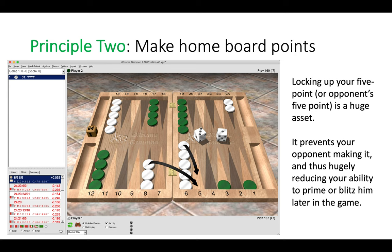Here by a large margin it's right to make the five point. The second principle: make home board points in the opening game. Locking up your five point or the opponent's five point is a huge asset. Three-one is the best opening roll. By making your own five point, it prevents your opponent making it, making the golden anchor. If your opponent did make that point it would hugely reduce your ability to carry out a prime or a blitz later in the game, so it is cancelling out two of your game plans.